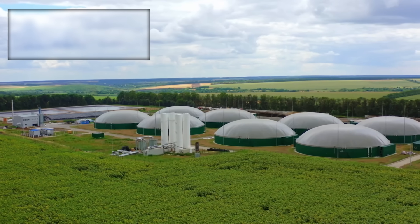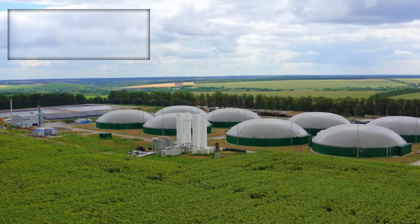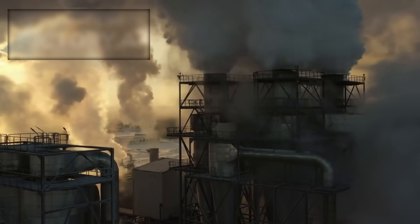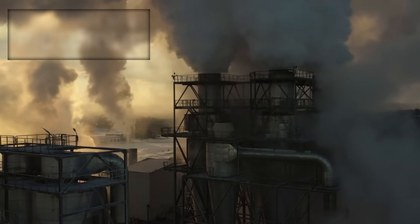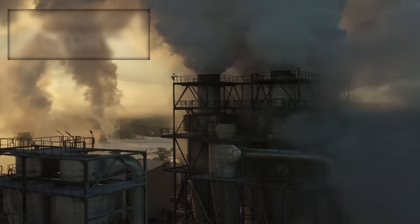Methane on Earth, for example, is largely produced by living organisms or industrial processes. If such a ratio exists on Proxima b, it could imply one of two things: either a biosphere with complex ecosystems or an industrial society capable of producing and managing gases in their environment.